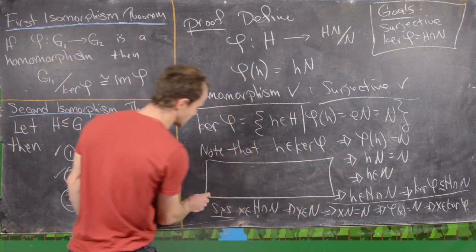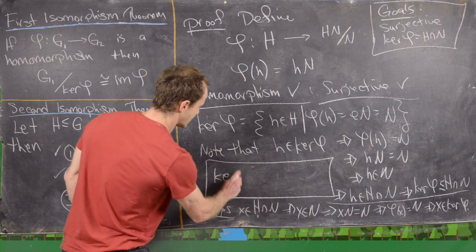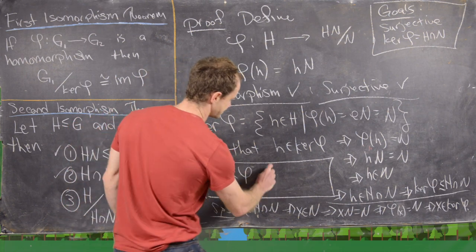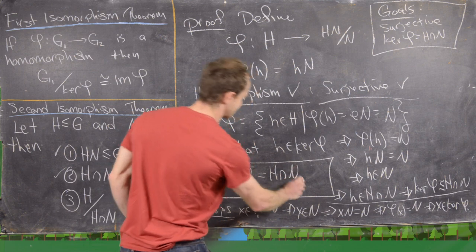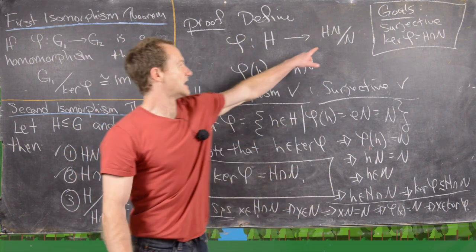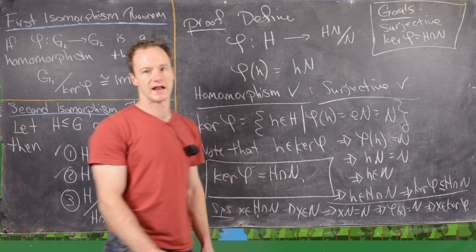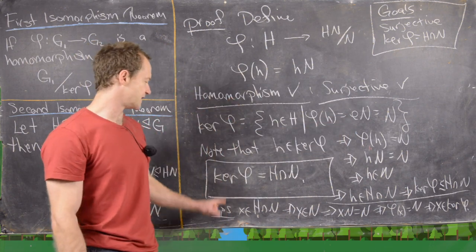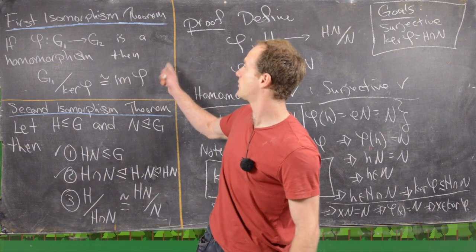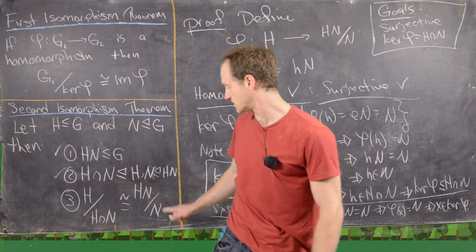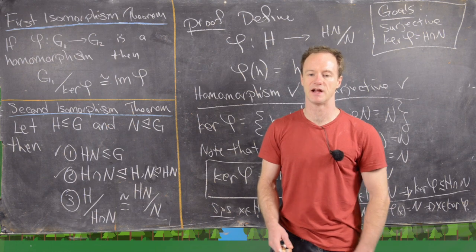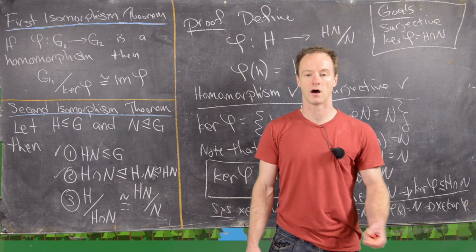So the image of φ is the whole right-hand side, φ is a homomorphism, and the kernel of φ equals H∩N. We can now apply the first isomorphism theorem, which gives us H mod (H∩N) ≅ HN mod N — the third statement — and this finishes the proof.